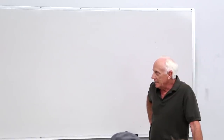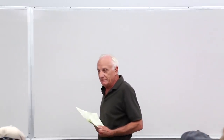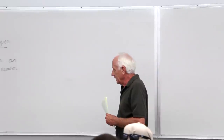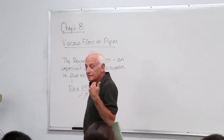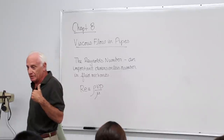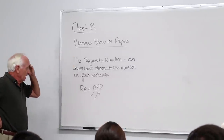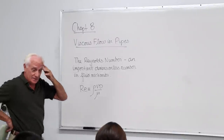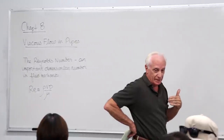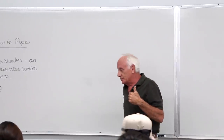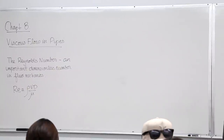The Reynolds number is defined as density times the average velocity V, times the diameter D — typically the inside diameter of the pipe — divided by mu, the viscosity of the fluid. Rho is the density of the fluid. If you work through those dimensions, you'll see that it is dimensionless.